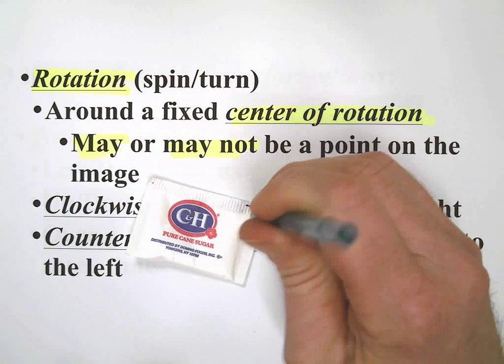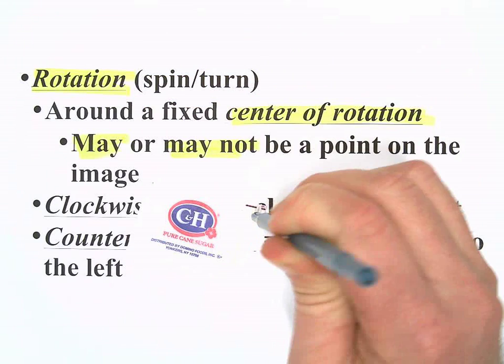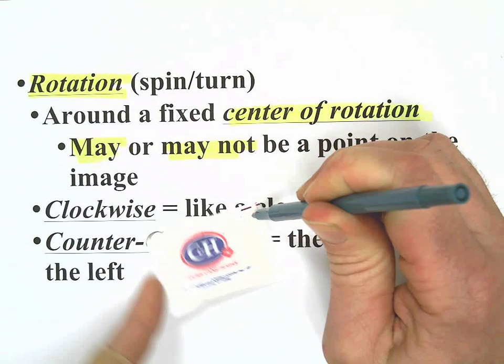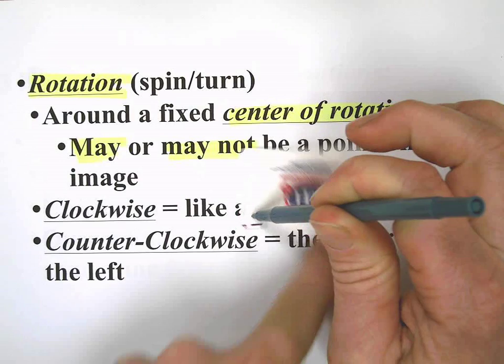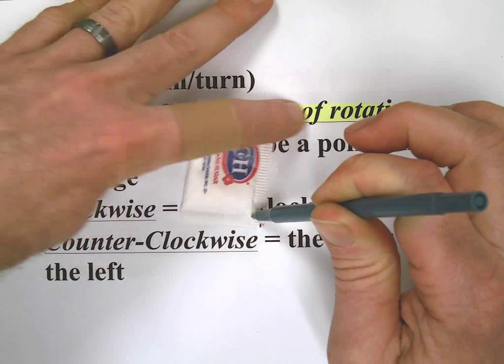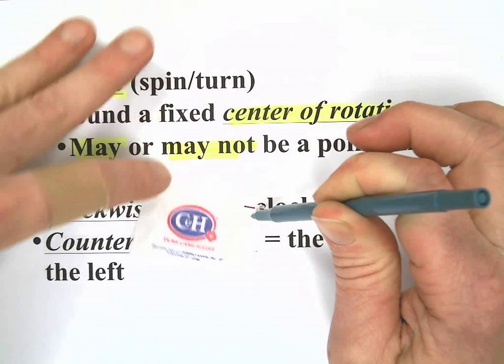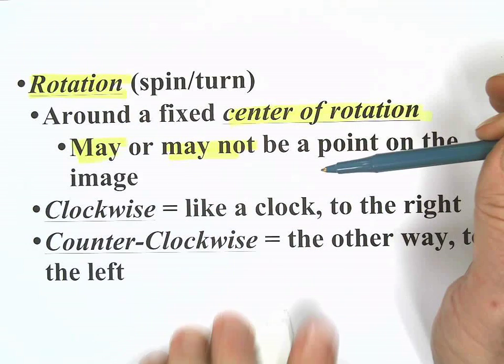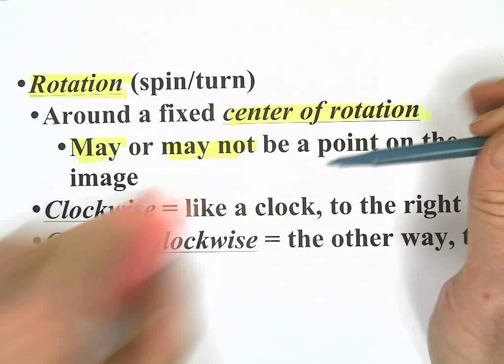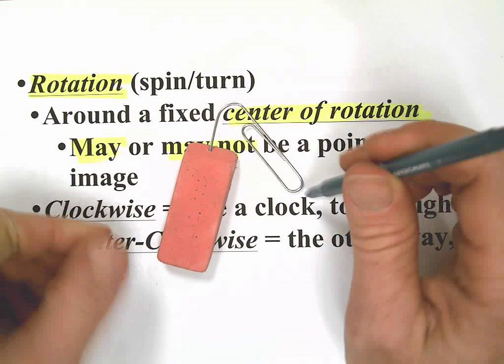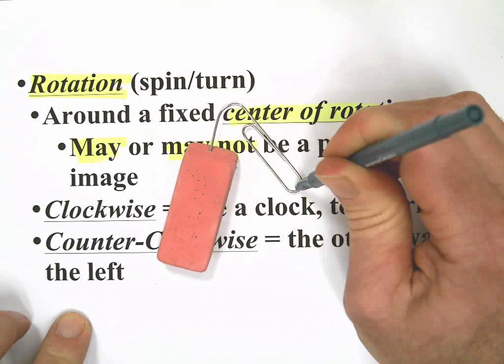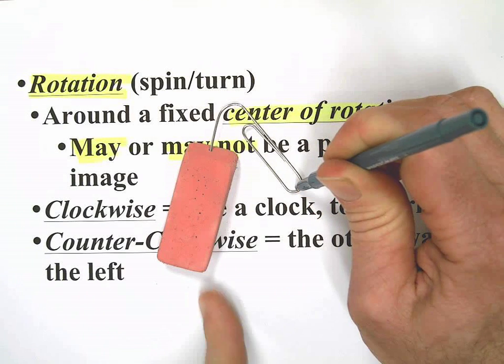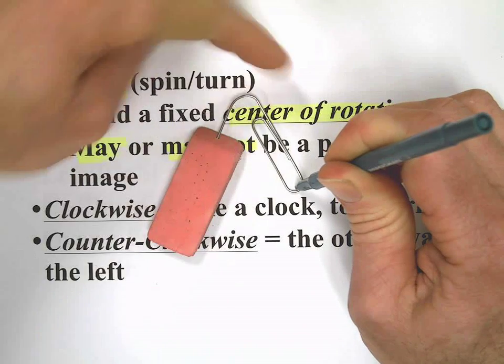So I have this pack of sugar, and I take my center of rotation and spin it. It's a point on the image. It's the corner, and I'm rotating around that center of rotation. But look at this high-tech device here. Pretend the paperclip's invisible, but I still have a center of rotation. Look at this.